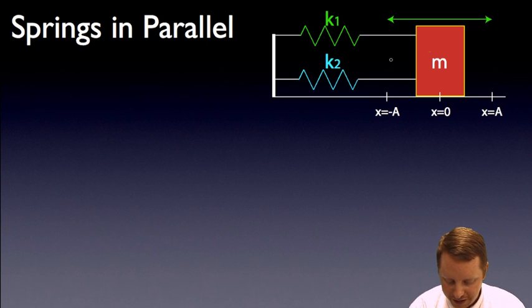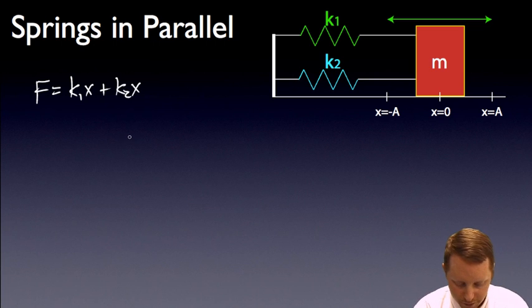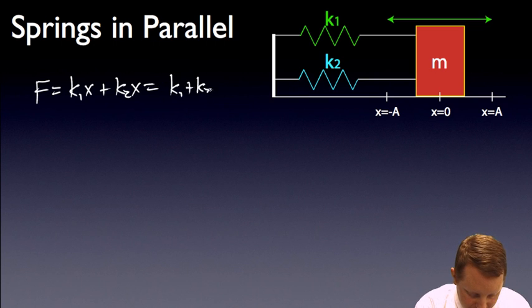So now we have our springs in parallel. We have k1 attached to m and k2 attached to m, and notice that the x has to be the same for both of these. So as we take a look at this, we could say that the force must be equal to k1x plus k2x, the force of spring 1 plus the force of spring 2. Or, that's k1 plus k2x. Pretty easy to see then,